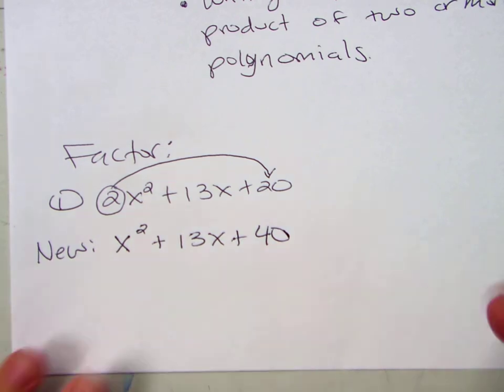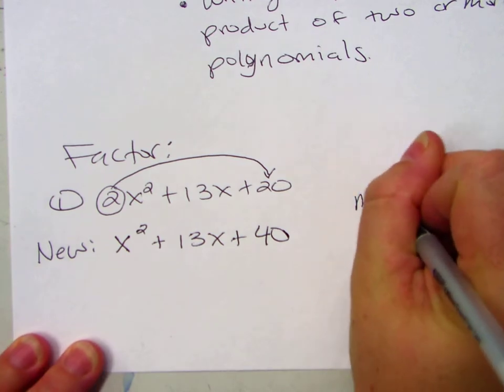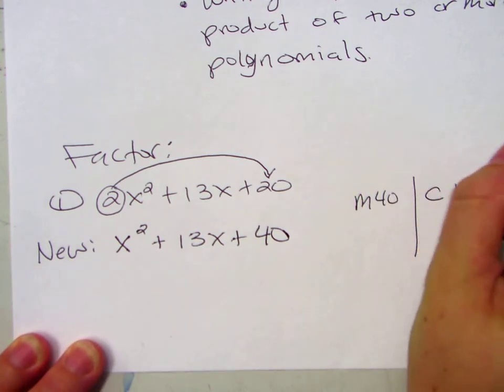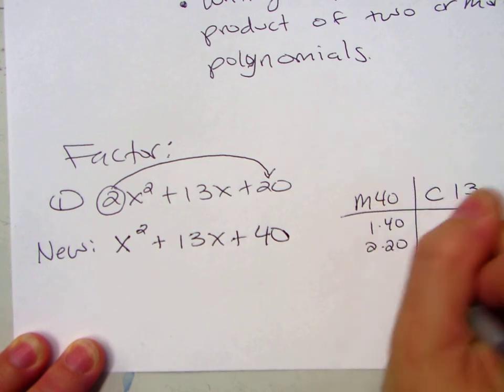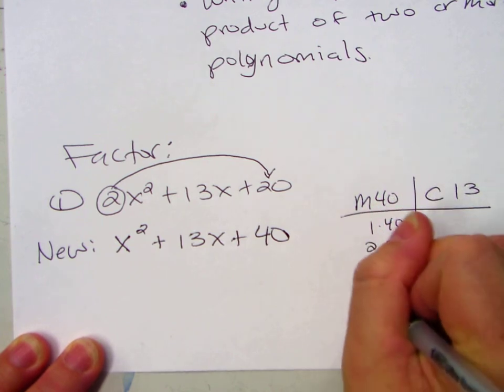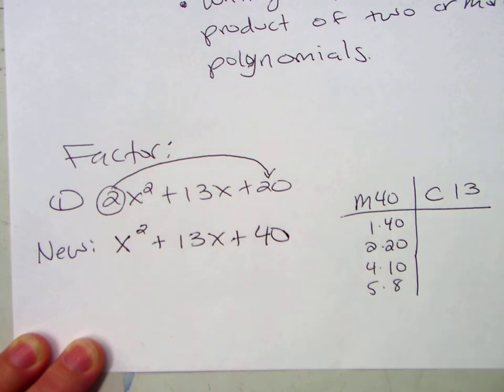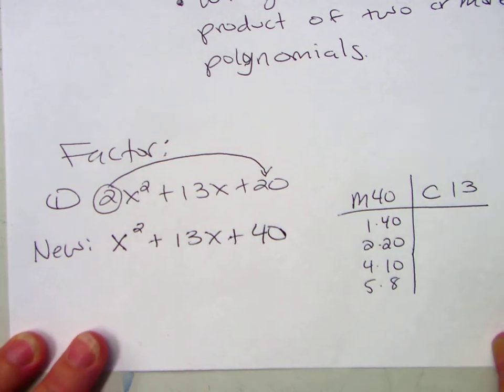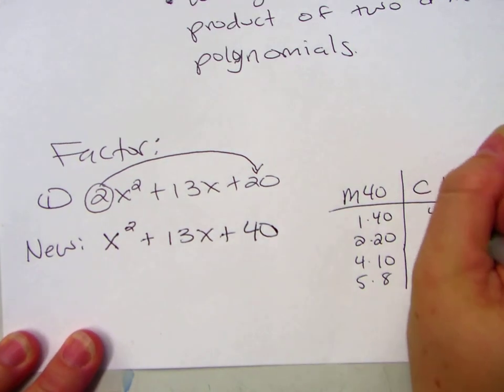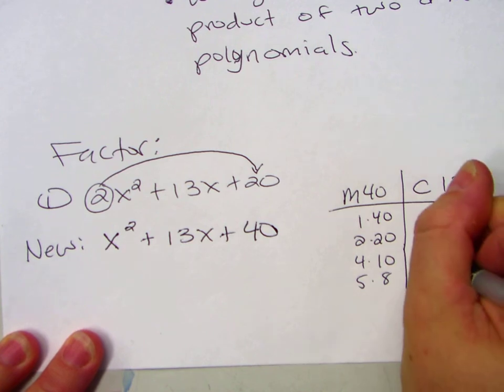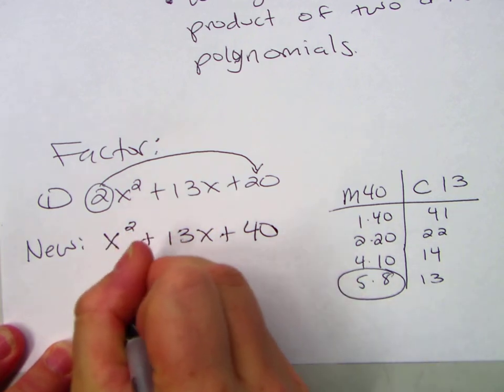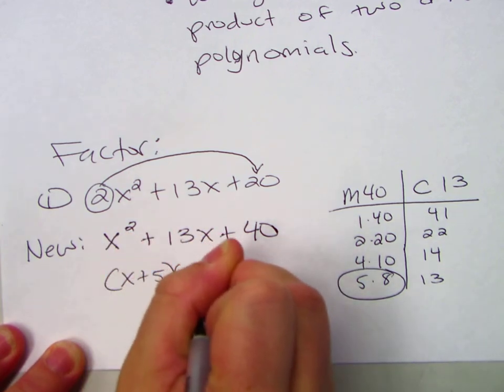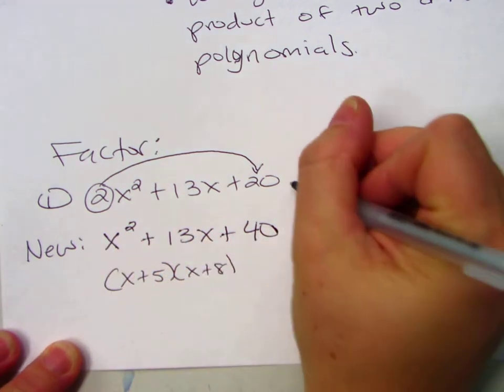How would you factor that? Make an MC chart. We're multiplying to 40. We're combining to 13. 1 times 40, 2 times 20, 4 times 10, 5 times 8. Which one of those pairs adds up to 13? So we get 5 and 8. Right? So when we factor this, we get x plus 5, x plus 8. But is this the answer to the original problem?